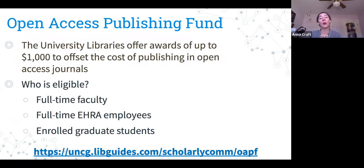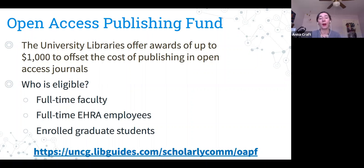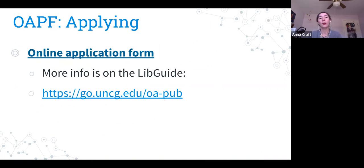We also have an Open Access Publishing Fund. Even without deals with every publisher, you can apply for up to $1,000 to offset the cost of your APC. Information and the online application form are linked on this slide. Please consider this as an option if you are looking for support with your APC.